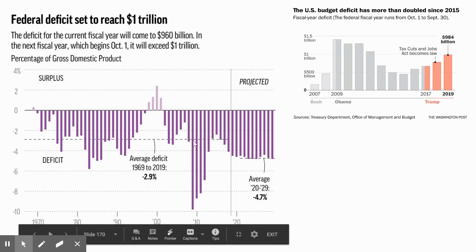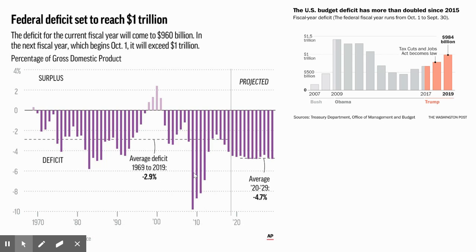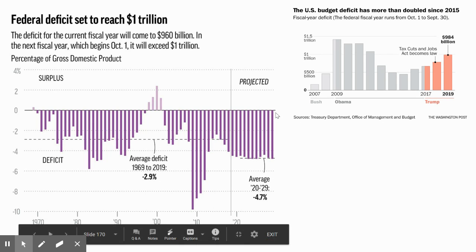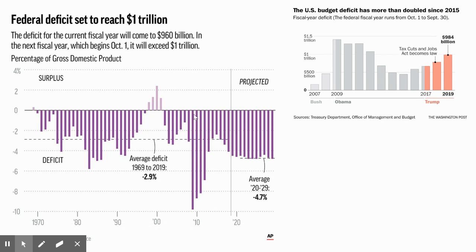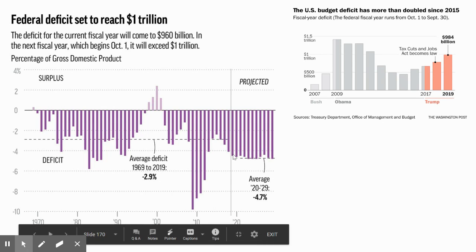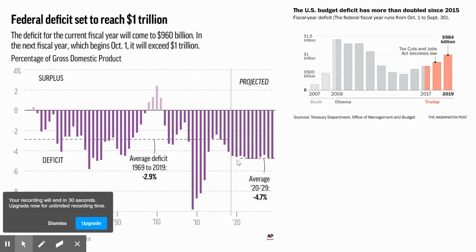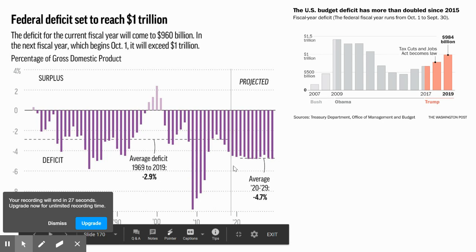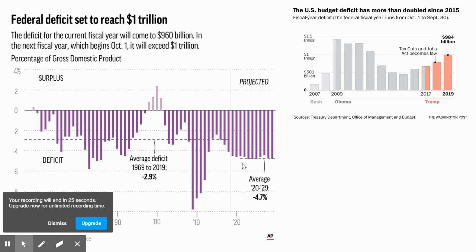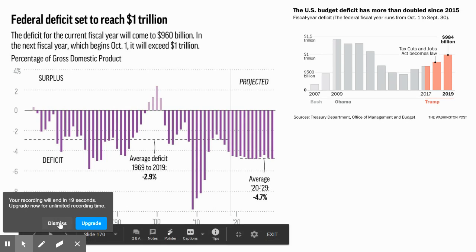These big spikes here correspond to the financial crash of 2008, when there was a big stimulus bill and a ton of money was pumped into the economy to try to prevent it from collapsing. This graph doesn't take into account COVID, but if it did you would see another long bar for 2021, because the COVID relief stimulus passed a couple of months ago was even bigger than the 2008 one.